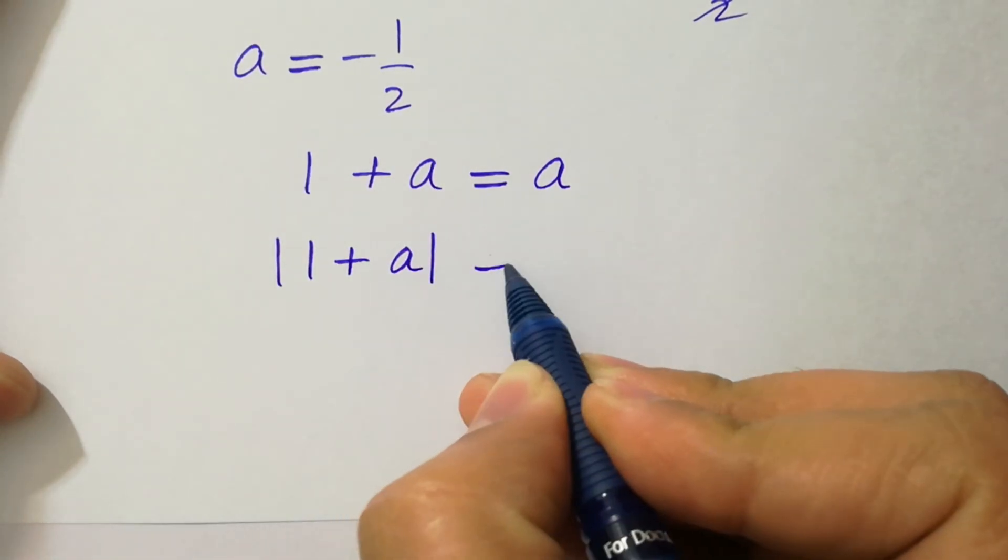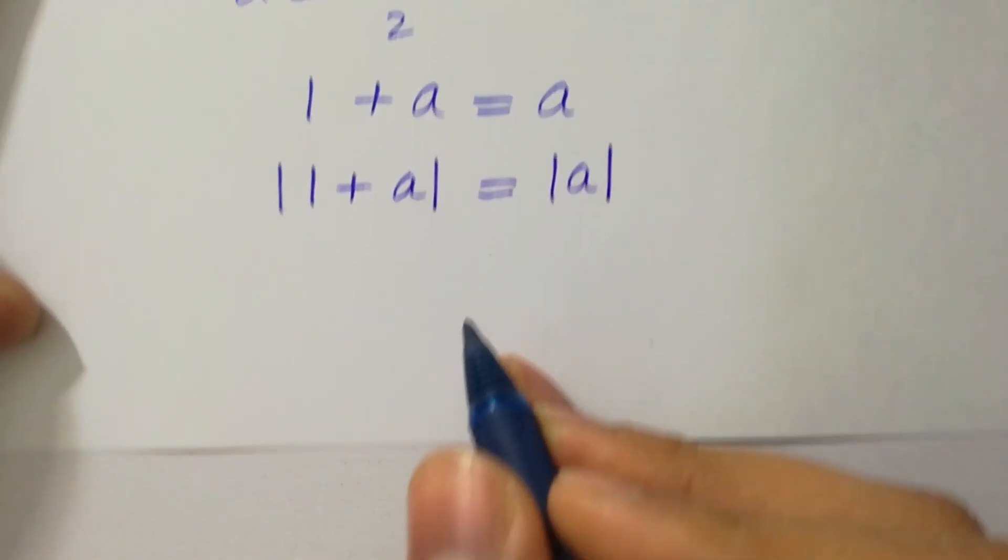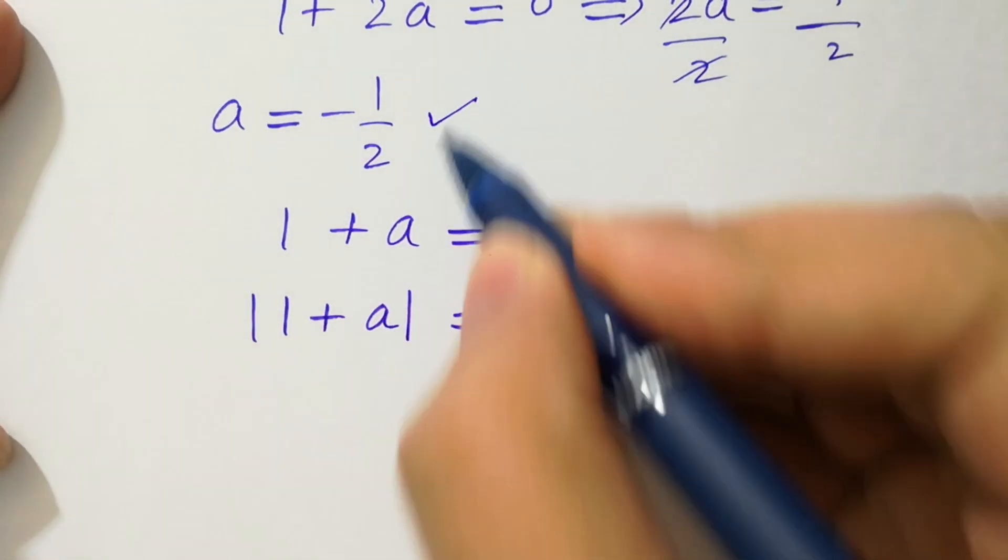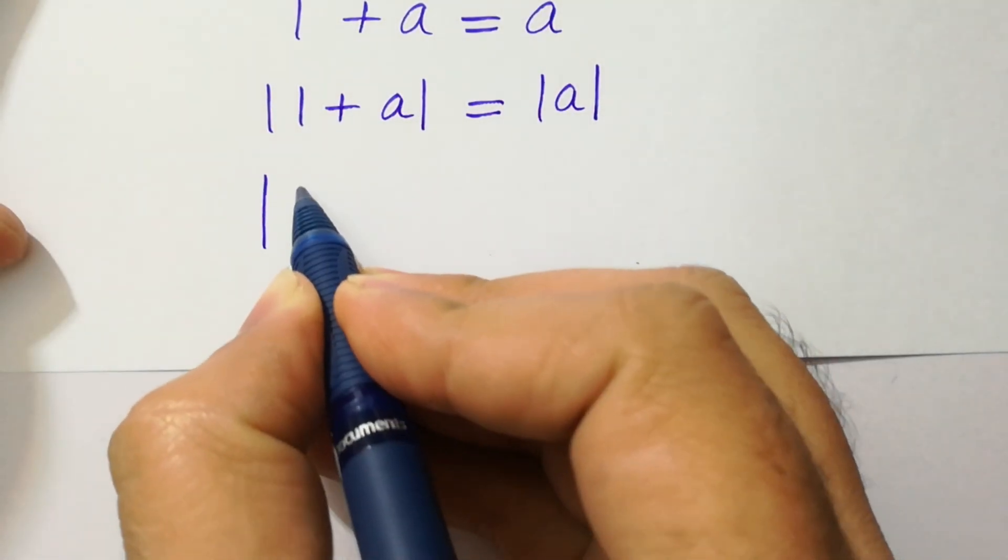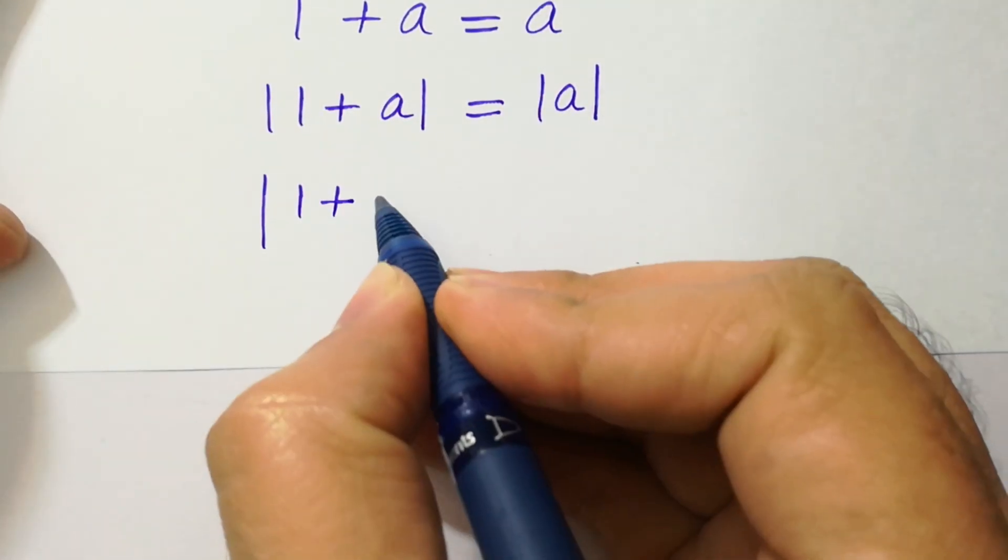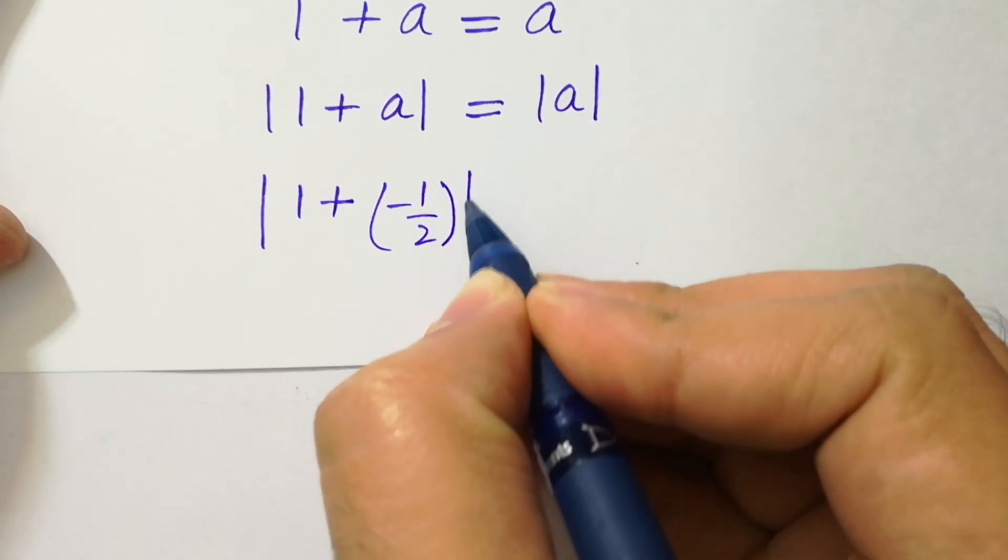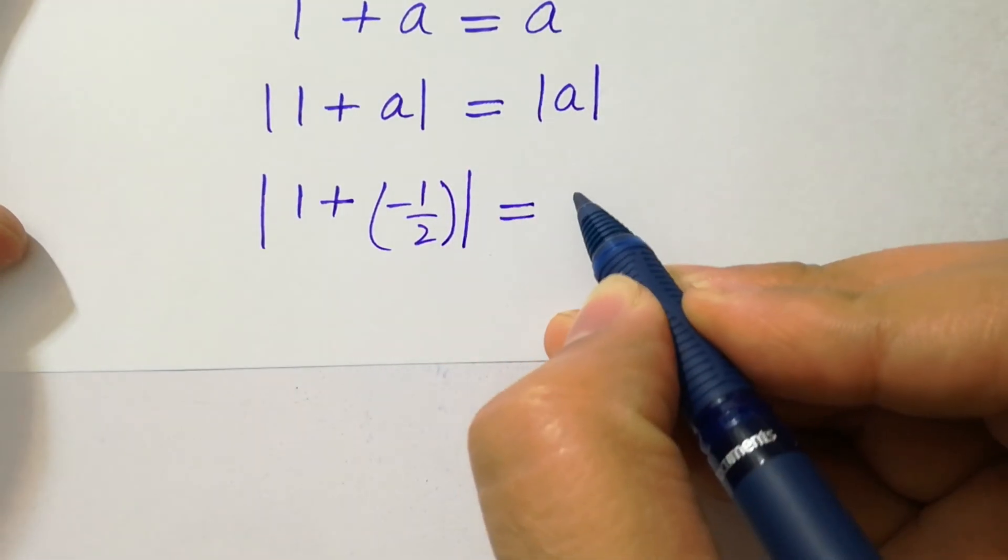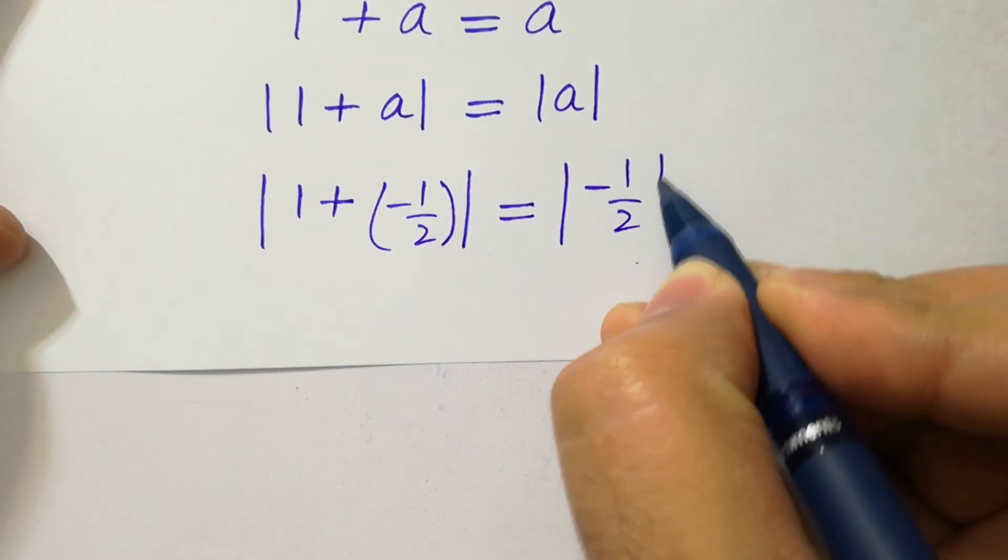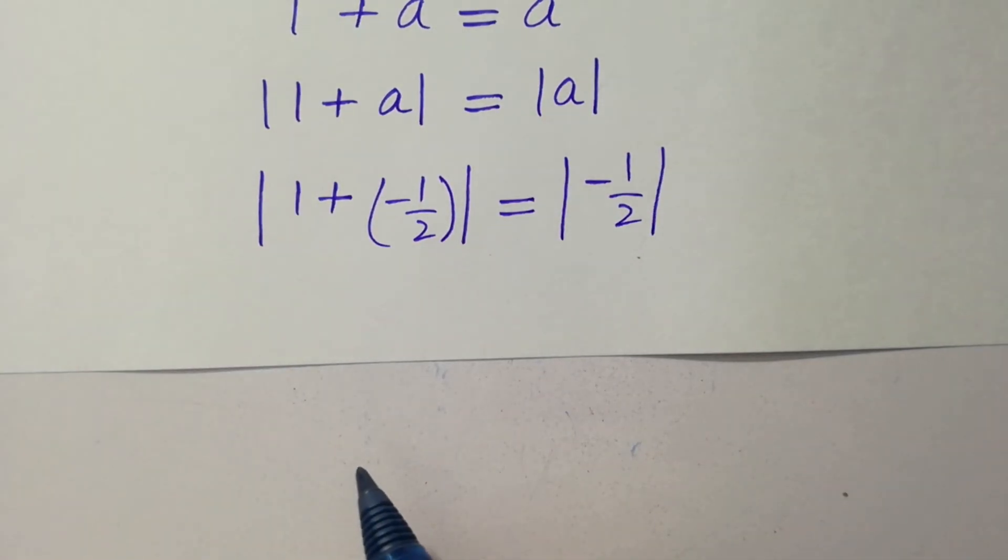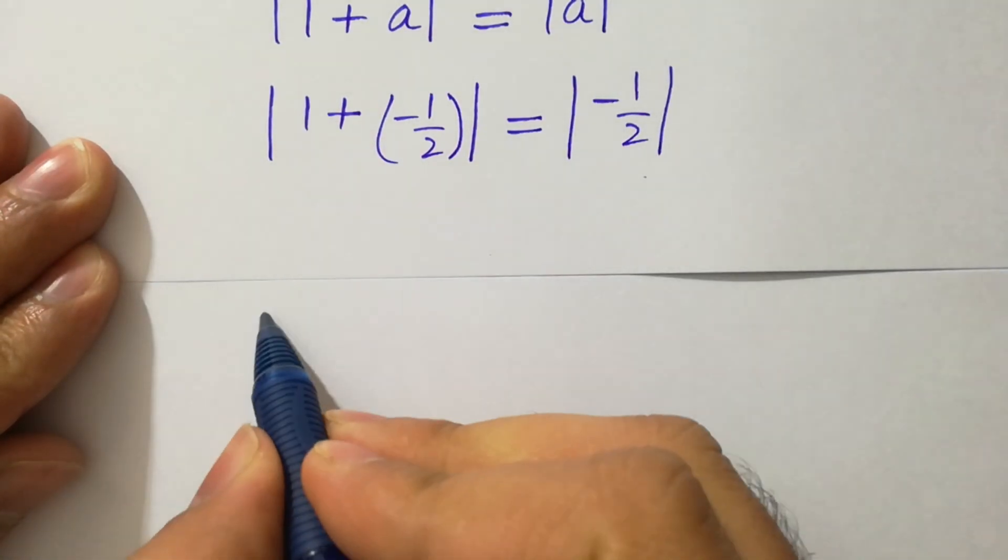Then put a equals minus 1 over 2 into this equation: absolute value of 1 plus minus 1 over 2 equals absolute value of minus 1 over 2. If we simplify this, we have absolute value